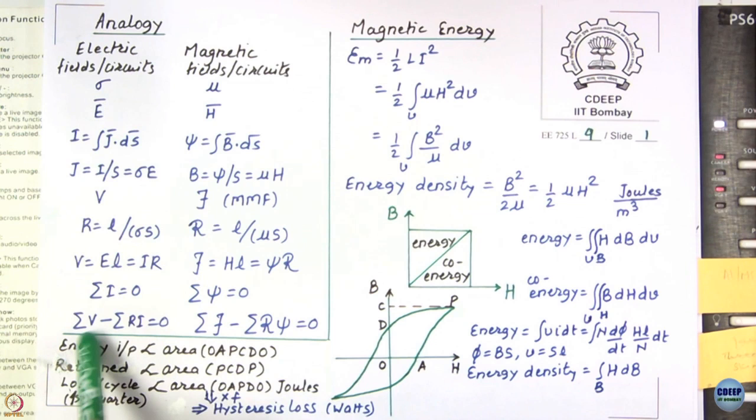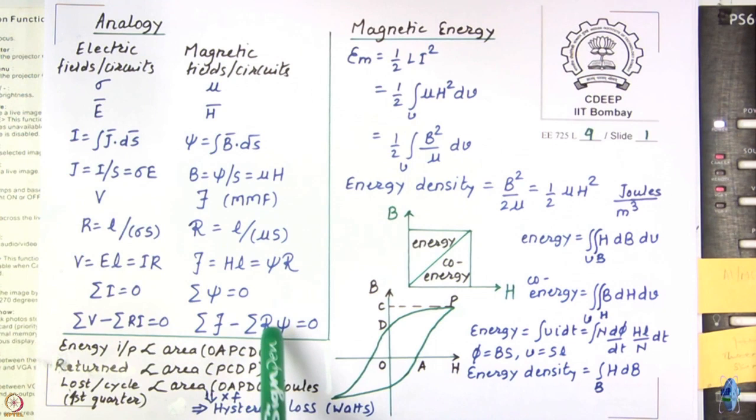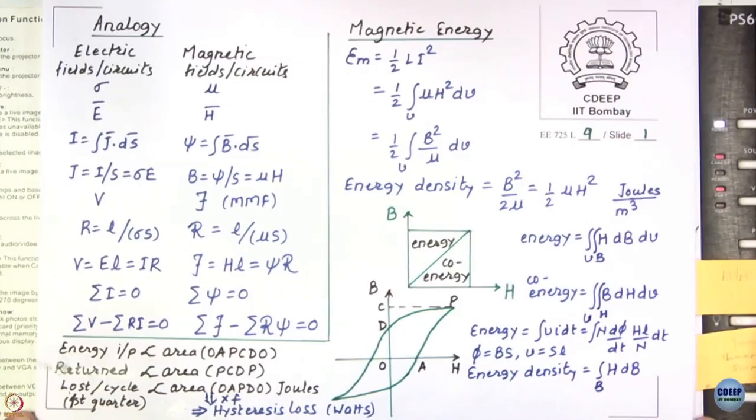V = E·L = I·R, whereas MMF = H·L = flux × reluctance. The KVL for electric circuits is: summation of V around the loop minus summation of R·I equals zero. The magnetic equivalent is: summation of all MMF sources minus summation of reluctance × flux equals zero. This analogy is important for understanding various electromagnetic devices.